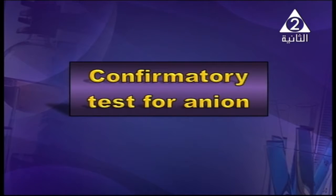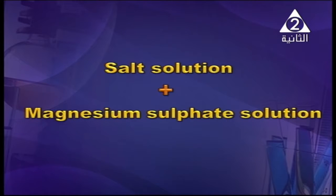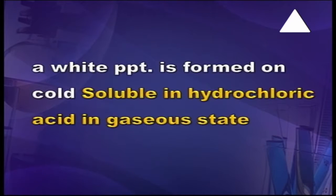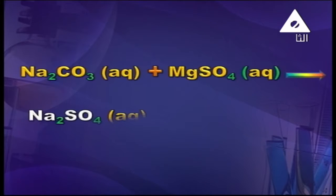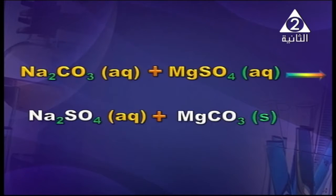Now, the confirmatory test for this anion — I want to be sure this is carbonate or not. When you get the salt solution and add it to magnesium sulfate solution, a white precipitate is formed in the cold. This means the formation of magnesium carbonate. Na₂CO₃ added to MgSO₄ gives Na₂SO₄ and MgCO₃ — magnesium carbonate — which is the white precipitate. This means you have the anion of the carbonate salt.